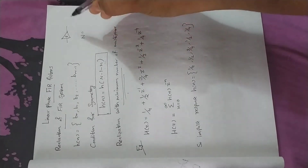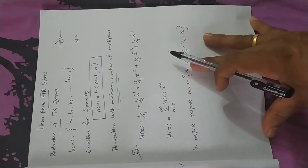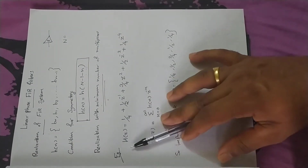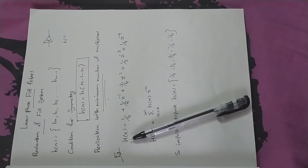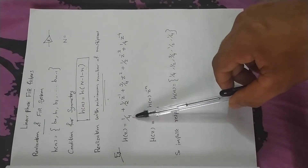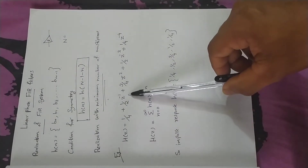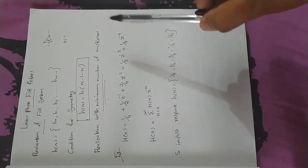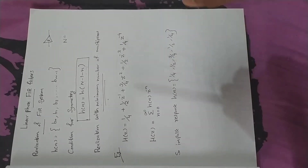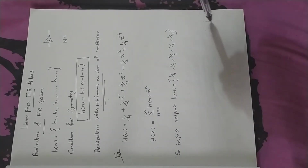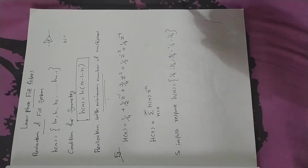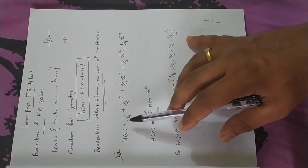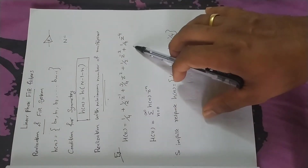Now we have to solve this problem. H(z) is equal to 1/4 plus 1/2 z-inverse plus 3/4 z raised to minus 2 plus 1/2 z raised to minus 3 plus 1/4 z raised to minus 4. This problem is to be solved.